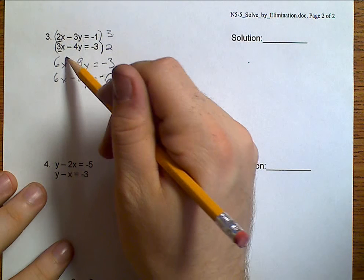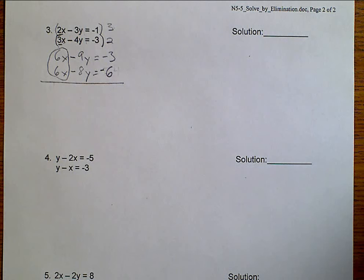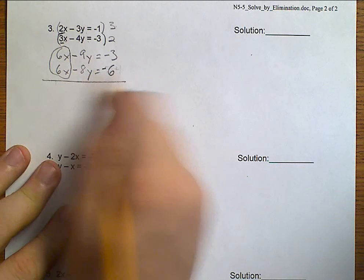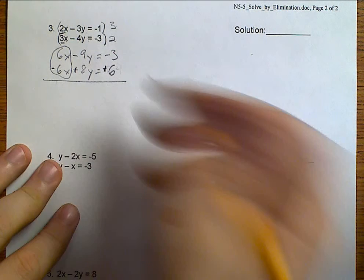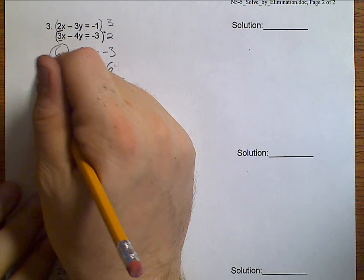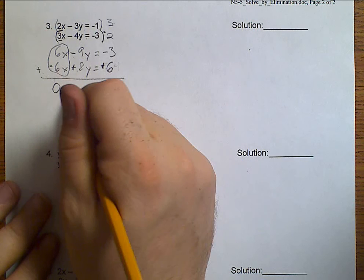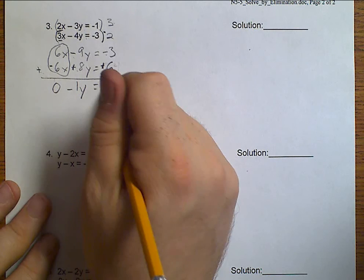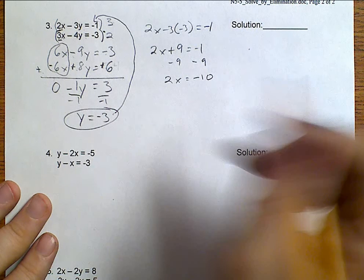Now, notice that our X's match. Well, this time, 6X and 6X, I can't add them and make them go away. So, I'm going to have to subtract. So, to subtract, I'm going to simply switch all my signs in the bottom. In essence, I didn't multiply by 2. I multiplied by negative 2. So, that now when I add, 6 minus 6 is 0. Negative 9 plus positive 8 is a negative 1Y. Negative 3 plus positive 6 is 3. Well, if I divide both sides by negative 1, I get that Y equals negative 3.